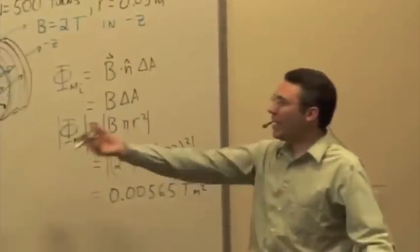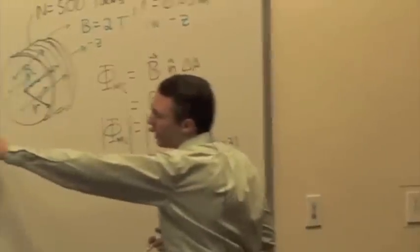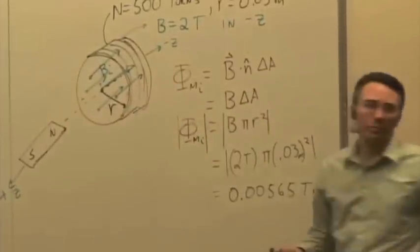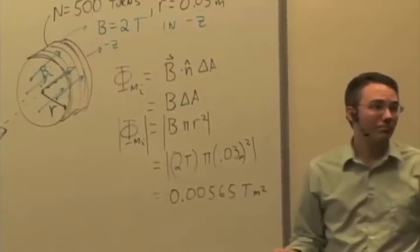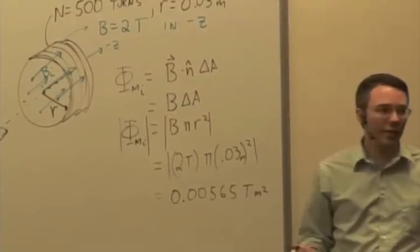All right, so now if I just have the bar magnet here, just holding it steady, what's the current in the coil? Current is zero.